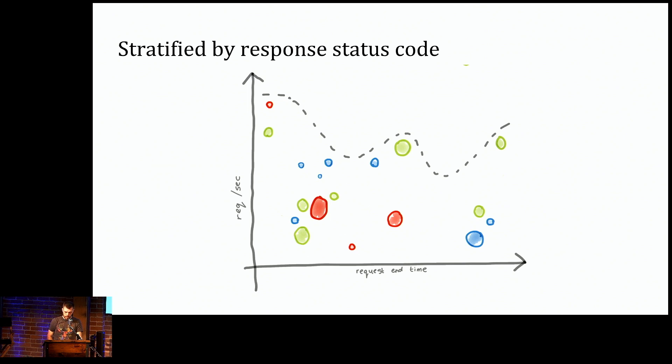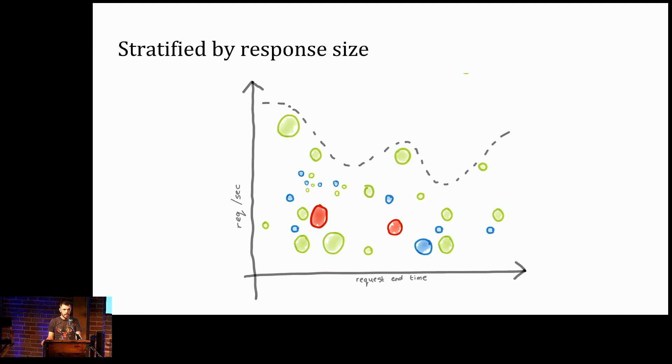So here we have a stratified sample on the status code column. We get approximately the same number of rows with each status code. For common status codes, we discard most of the rows, the greens. For rare status codes, we might end up keeping all of the input data, for example the reds. Here's another example of a stratified sample on the same data. Here, instead of stratifying on the status code, we're stratifying on the response size by bucketing responses of similar size and then keeping the same number of items from each bucket. So this kind of thing is really useful for answering queries on outliers, like very large responses or very small responses that might be missed by a uniform sample.